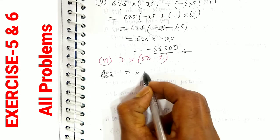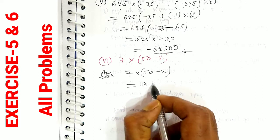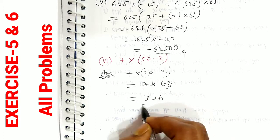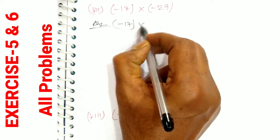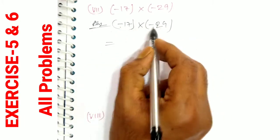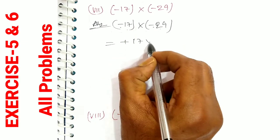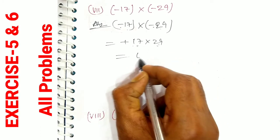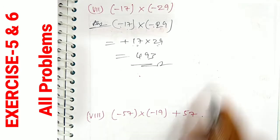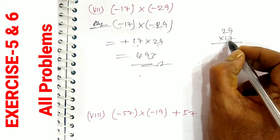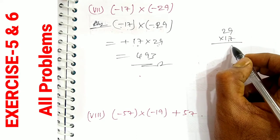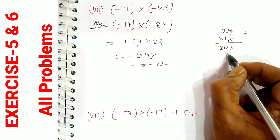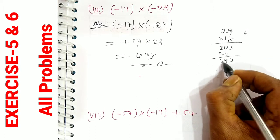Sixth bit: 7 into 50 minus 2. 7 into 50 minus 2 is 7 into 48. The answer is 336. Seventh: minus 17 into minus 29. Minus into minus is plus. So 17 into 29: 9 times 7 is 63, carry 6; 7 times 2 is 14 plus 6 is 20, carry 1; 1 times 9 is 9; 1 times 2 is 2. Result: 493. The answer is 493.